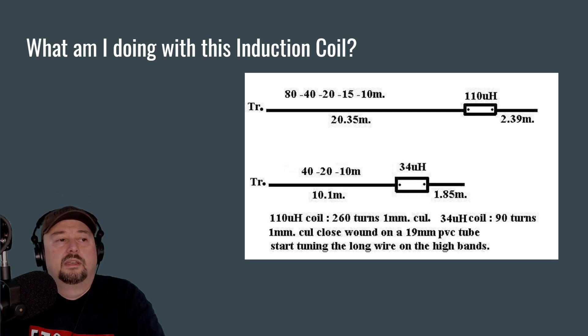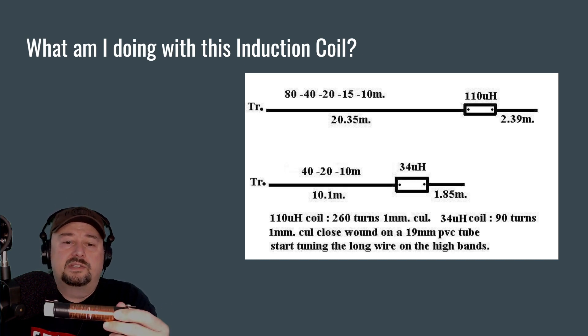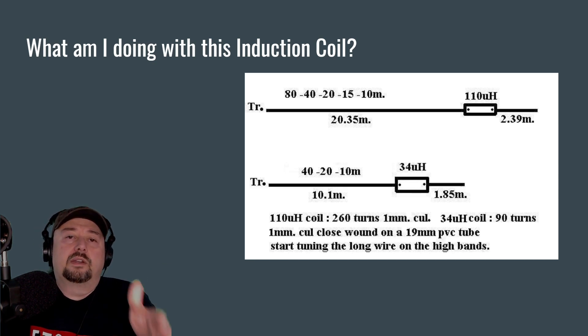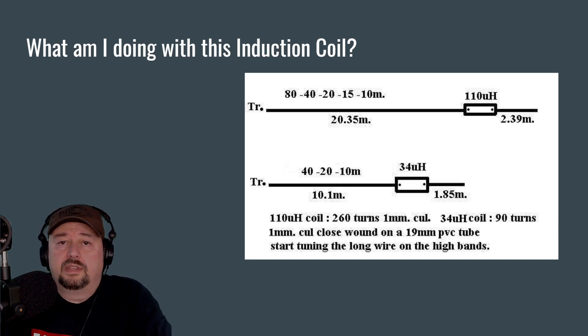Now the way that this is going to work is when I'm operating on 40 meters, I'm going to utilize the entire antenna, all 12 meters. When I'm operating on the 20 meter band or 20 meter segments, the 14 megahertz range, this induction coil, if everything goes according to plan, will choke or filter out frequencies at that 14 megahertz frequency, and it will stop at the induction coil and thus electrically shorten my antenna, making it look like a 20 meter NFED half wave.